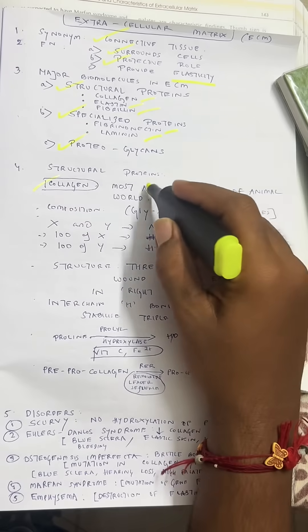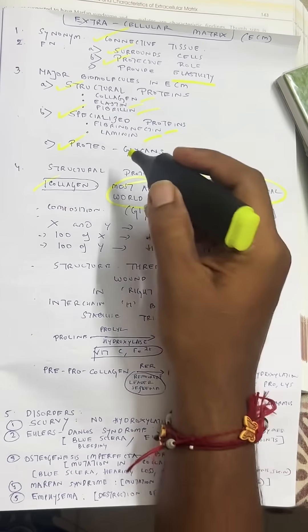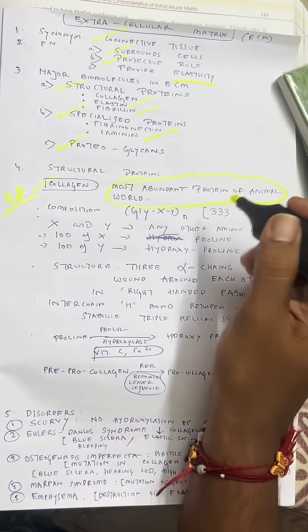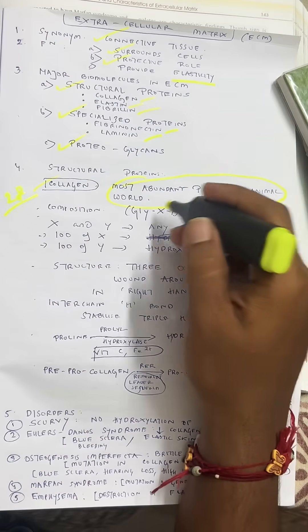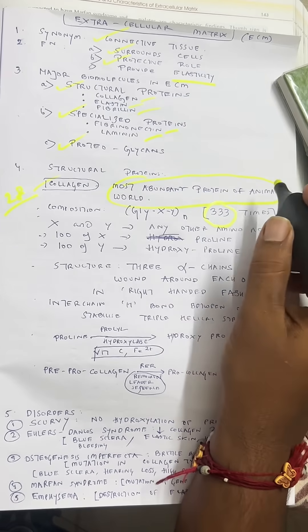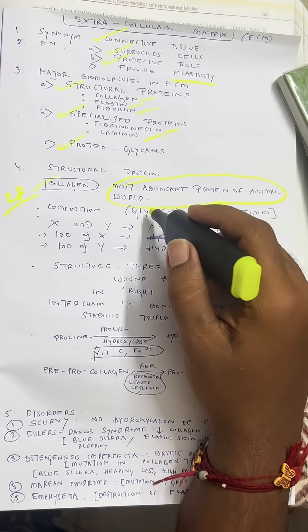Collagen is the most abundant protein of the animal world. There are 28 types of collagen overall. The composition of collagen is glycine-X-Y, which is repeated 333 times.